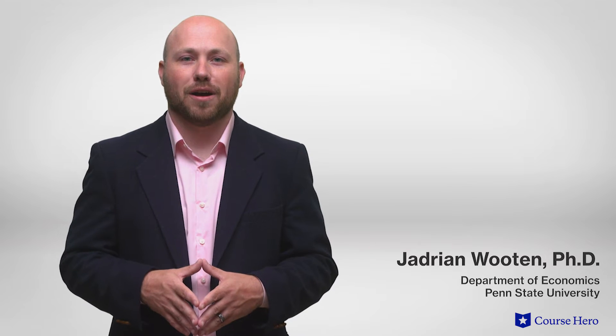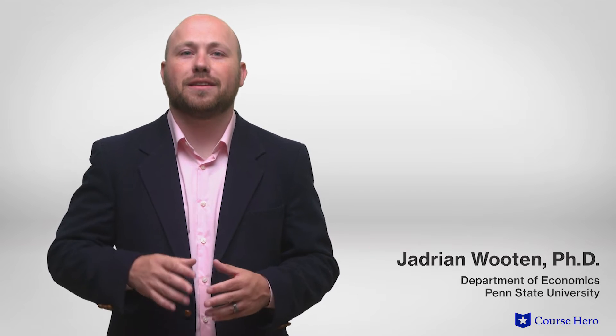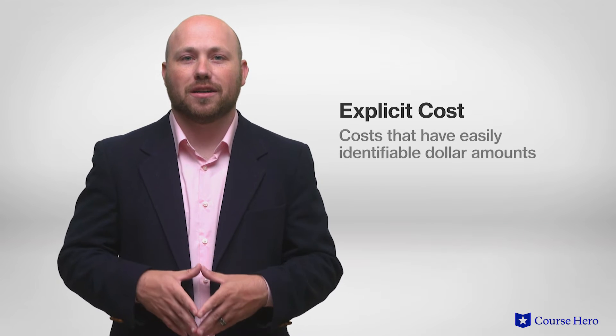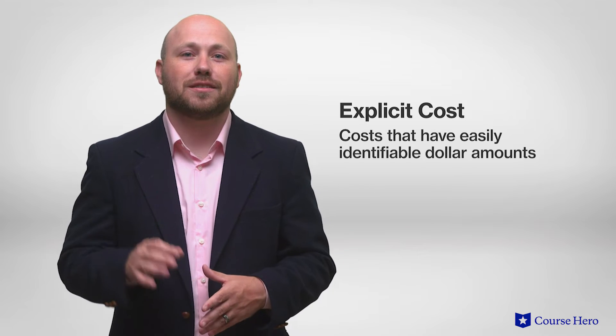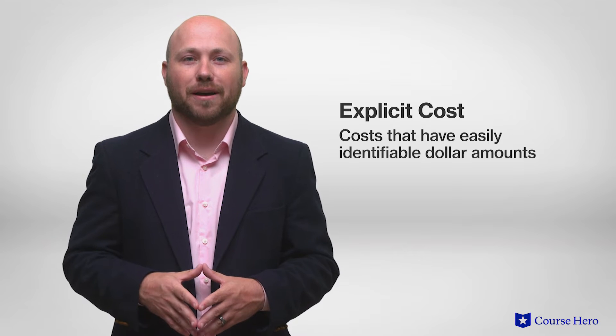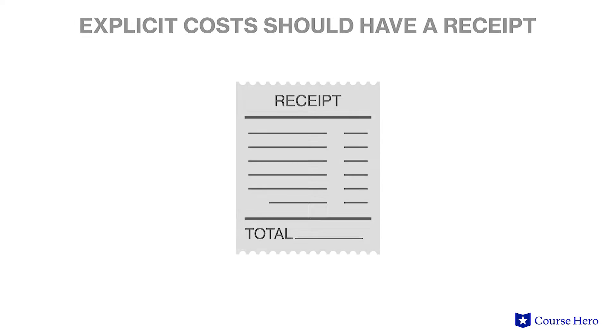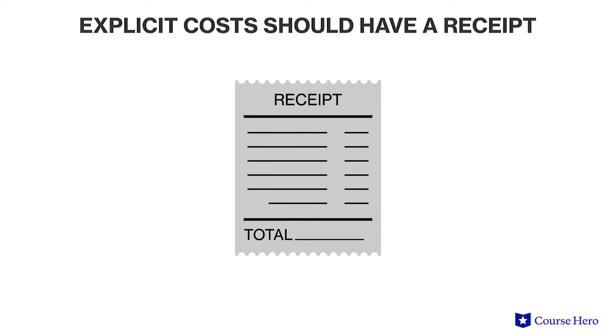Economists use different names for different measures of profit depending on the types of costs being considered. Explicit costs are costs that have easily identifiable dollar amounts. A good rule of thumb is that these costs should have a receipt that shows it was paid, which would be really valuable for an accountant so that they could track and record each dollar leaving the company.